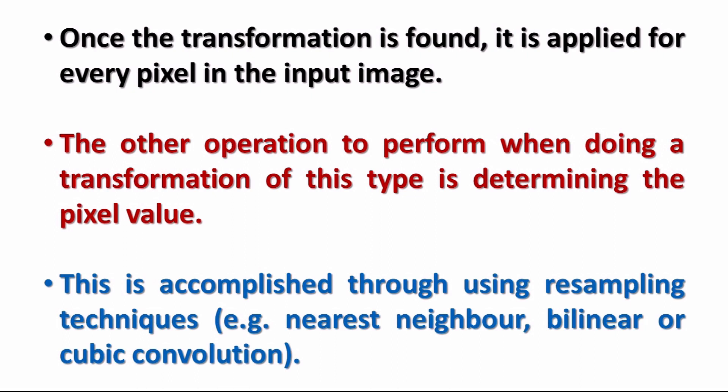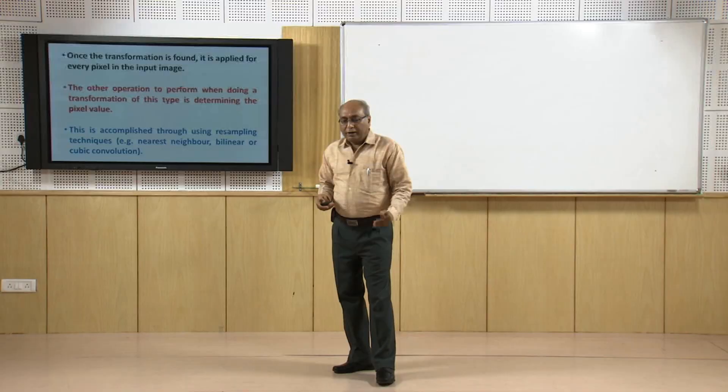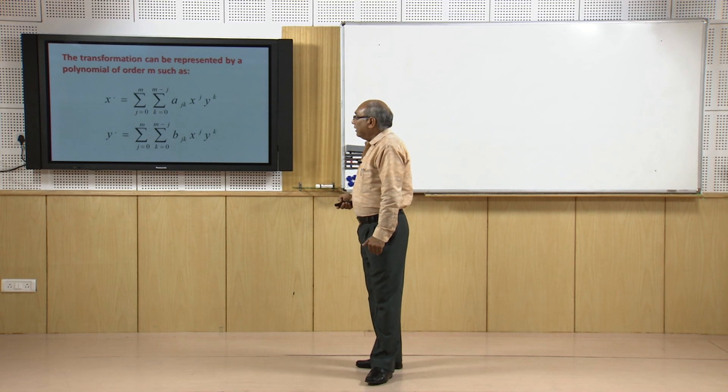There are three types of resampling techniques implemented in GIS and image processing software: nearest neighbor, which is simple and quite accurate; bilinear, which is more complex; and cubic convolution. We will see all three one by one.